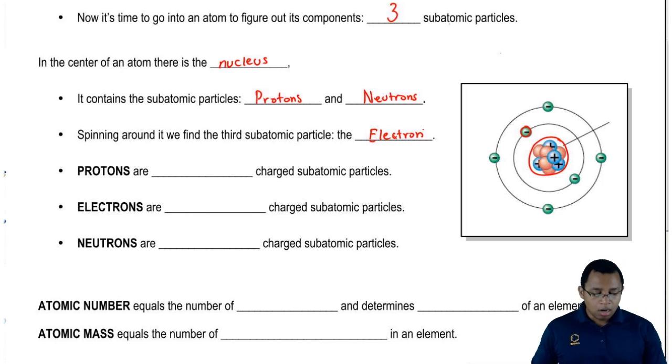The protons are positively charged. The electrons which are spinning around our nucleus are negatively charged.